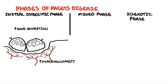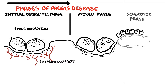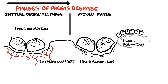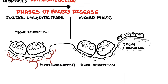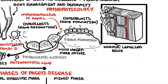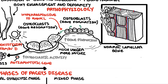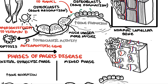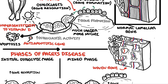The osteolytic phase is then followed by the mixed phase. In the mixed phase, there is a mix of both active bone resorption and bone formation, which replaces the normal lamellar bone with haphazard woven bone. The bones being formed are essentially weak. Remember, normal lamellar bone is mature, highly organized, and strong. In contrast, the woven bone produced by osteoblasts is composed of loosely and randomly arranged collagen bundles, making it weaker than normal lamellar bone.